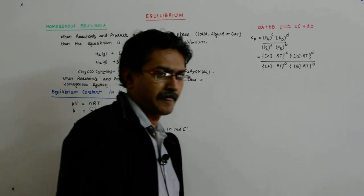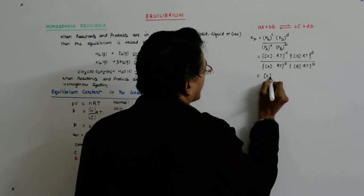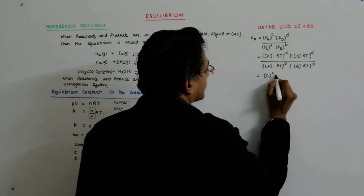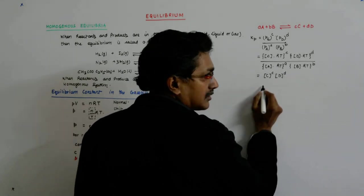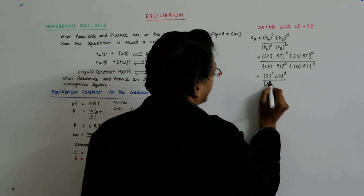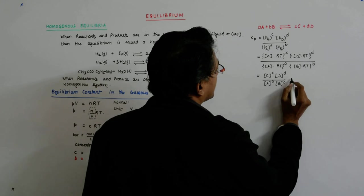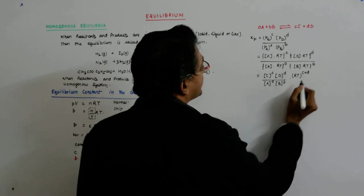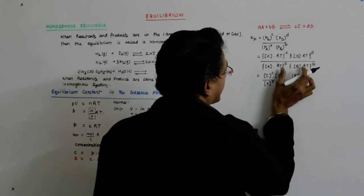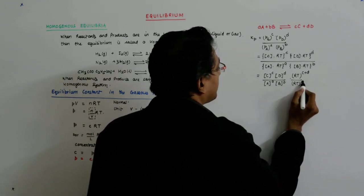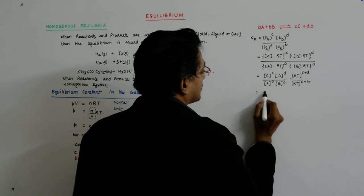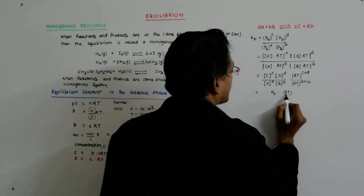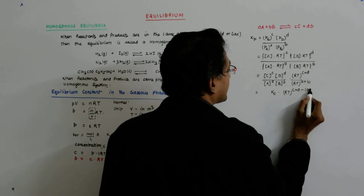Now that gives me concentration of C to the power c times concentration of D to the power d upon concentration of A to the power a times concentration of B to the power b times RT to the power c plus d here. And this is a plus b. So that should go up and get subtracted. Now this is what?